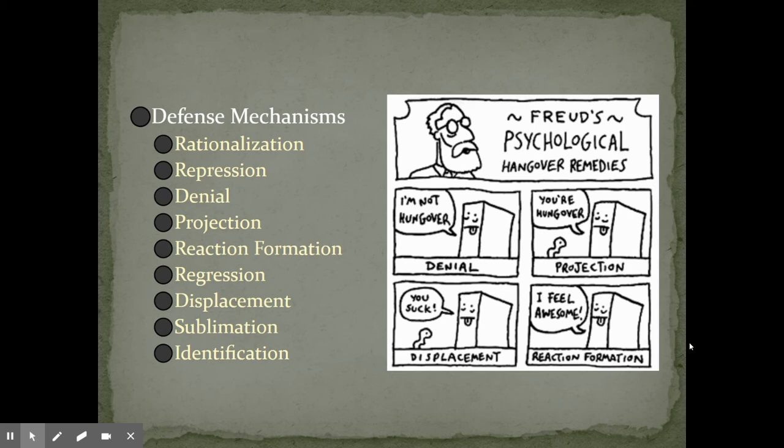Sublimation is when we transfer something that's unacceptable into something that is acceptable. If somebody has really aggressive tendencies, maybe they start taking a kickboxing class, for example. And then, finally, identification is where we take on the characteristics of people who we find to have these negative attributes. So, an example of this would be if somebody is being verbally abused, that then they become a verbal abuser as well.